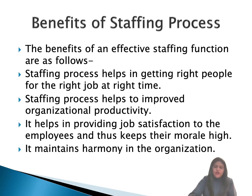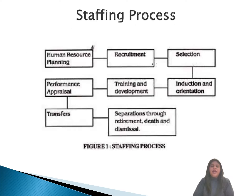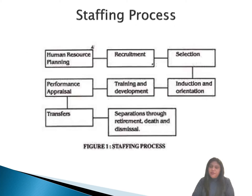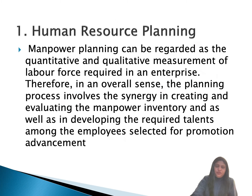Let's talk about the process of staffing. Basically, there are nine steps. First comes human resource planning (HRP). Then recruitment, followed by selection. After selection comes induction and orientation programs. Then training and development of employees and performance evaluation or performance appraisal. And according to their performance evaluation, we'll do transfers, demotions, and promotions.